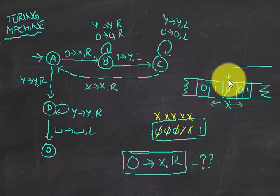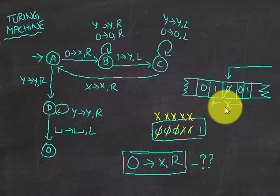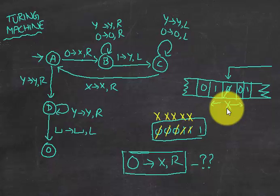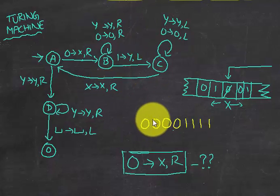The head can modify the content of a cell by replacing it with another symbol. For example, if you want to modify the symbol zero in a cell, you can replace it with X, and after that you can move left or right by one step. It's basically an infinite tape.